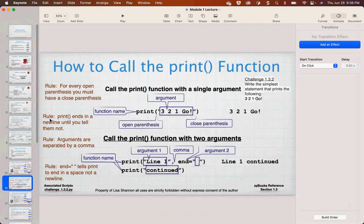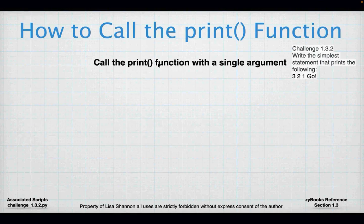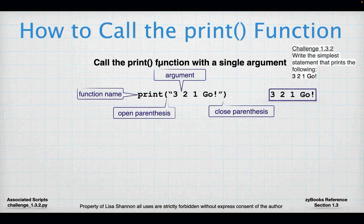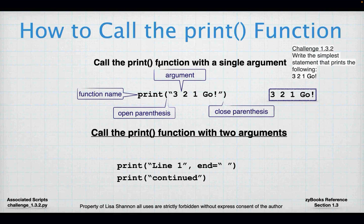Let's talk more about the print function. You can call it with a single argument or multiple arguments. An argument is simply what is inside the parentheses of a function call — it can be a variable, a string, an integer, or a float. I have the function name 'print,' the argument is the string '3, 2, 1, go,' with an open and closing parenthesis. When I say print '3, 2, 1, go,' it puts that to the screen.